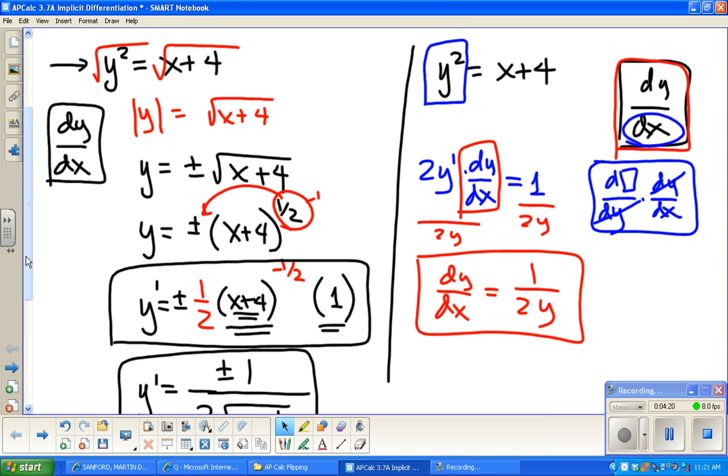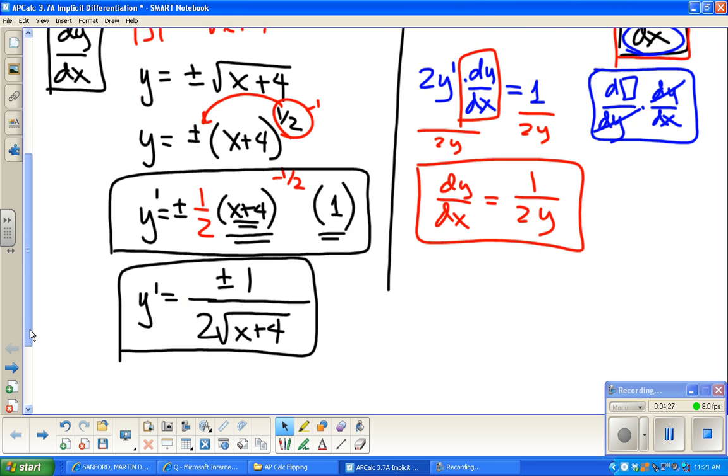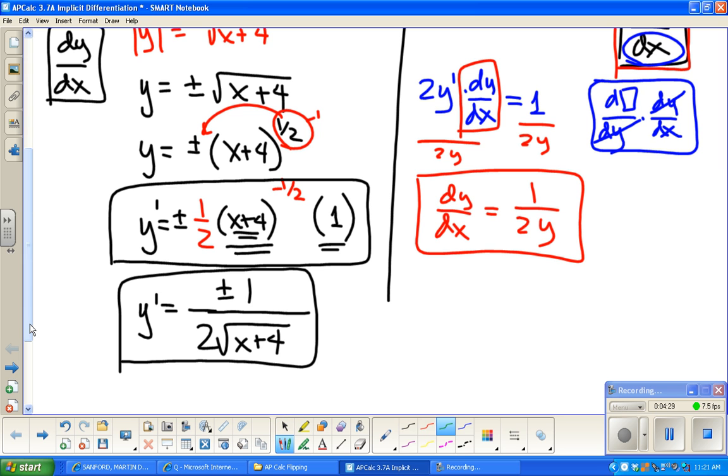Now, the only question is, how can that possibly be the same thing as what we got a second ago? You know, dy/dx and y prime. So, these two things are supposedly the same thing. Well, if you recall what y is actually equal to. Remember that this is what y is equal to. If I take that and put it in, if I put that in in place of that y.